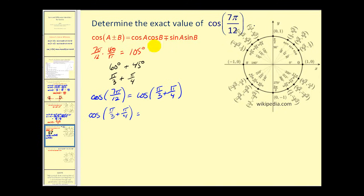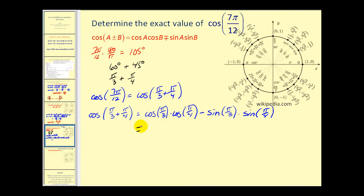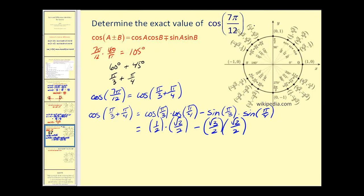Setting up the identity: cosine a times cosine b. Since we're using a sum, we use a difference in our identity: cosine(π/3) times cosine(π/4) minus sine(π/3) times sine(π/4). Cosine of π/3 is 1/2, cosine of π/4 is square root two over two, and sine of π/3 is square root three over two. With a common denominator of four, the cosine of 7π/12 equals square root two minus square root six, all over four.